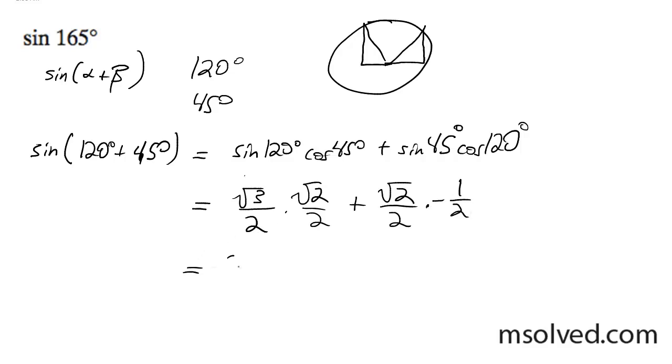So we're going to multiply these together. We get root 6 over 4 plus negative root 2 over 4. And finally we're going to get root 6 minus root 2 over 4.